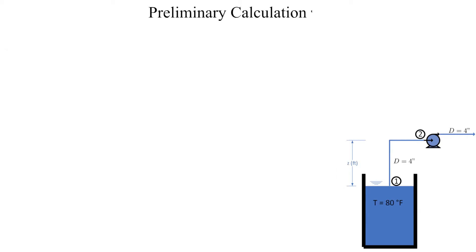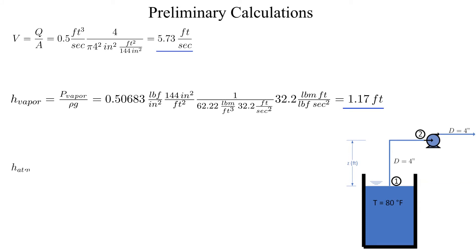Now let's do some preliminary calculations. We are going to need the velocity in the suction piping to calculate the head loss. We will need the vapor pressure head and we'll also need the atmospheric pressure head. These calculations are shown here.